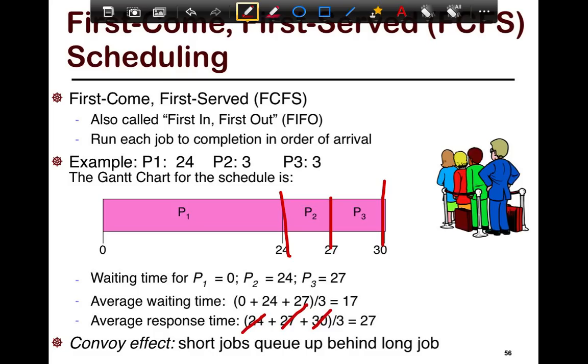FCFS is really simple because you're making local decisions. As tasks keep coming in or jobs keep coming in, you just keep putting them in the queue and then popping the queue in order. The big challenge with FCFS, though, is the convoy effect.